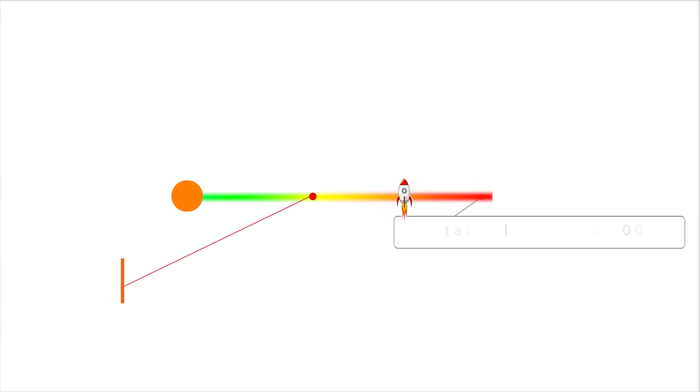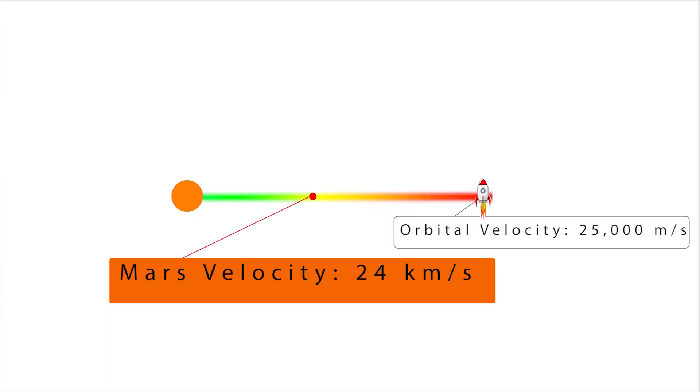Your spacecraft has to go at 25,000 meters per second, but your spacecraft goes 1 meter per second too fast. Then that 1 meter per second differential in speed will eventually build up until you reach escape velocity and you will have to leave Mars' orbit.